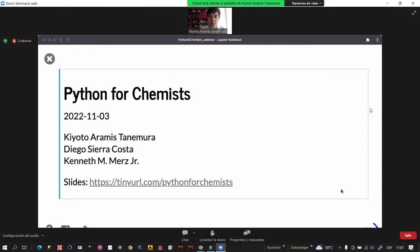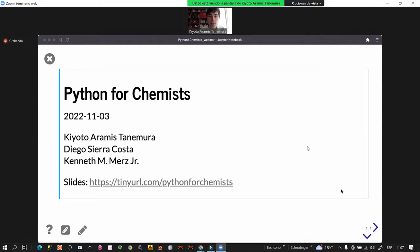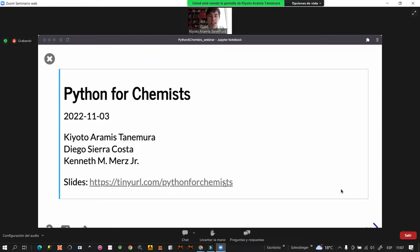Greetings, everybody. My name is Kiyoto Aramis Tanemura. I earned my Ph.D. in the Kenneth M. Myers Jr. research group, and now I am in the Gua Weiwei research group, both at Michigan State University.